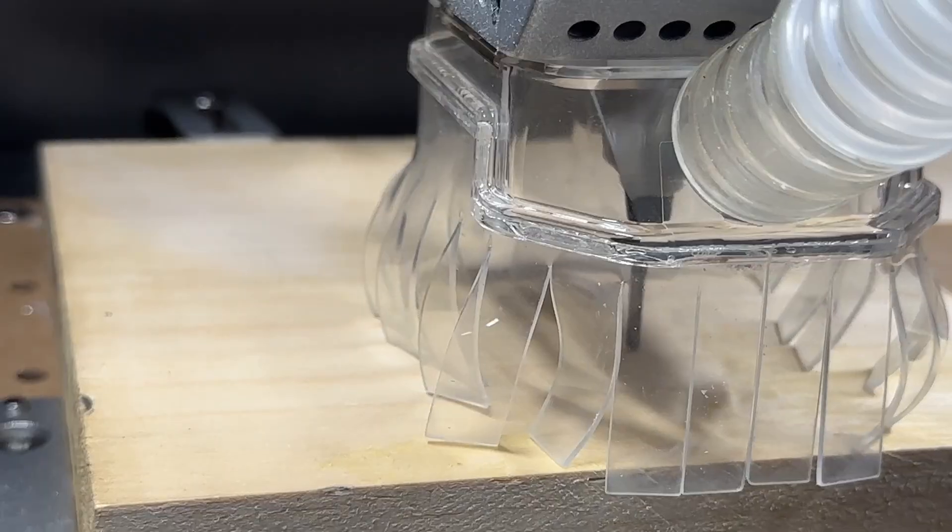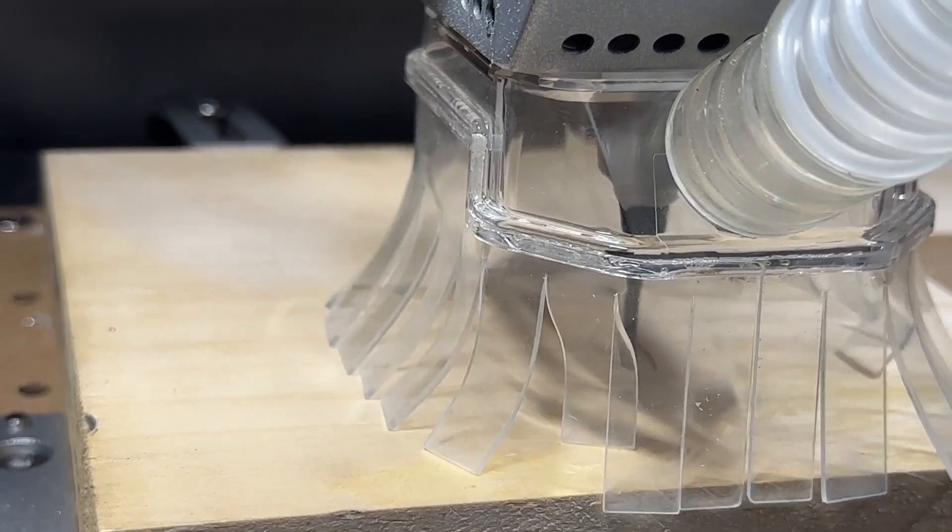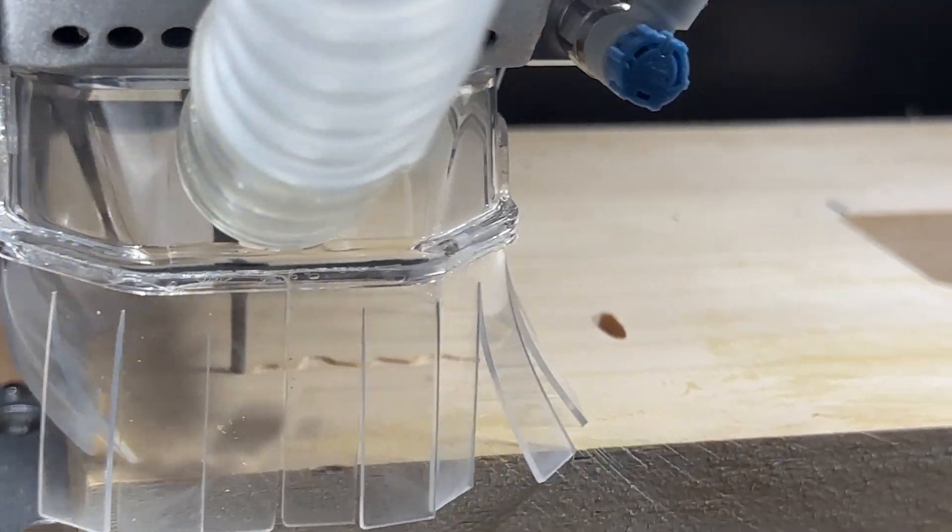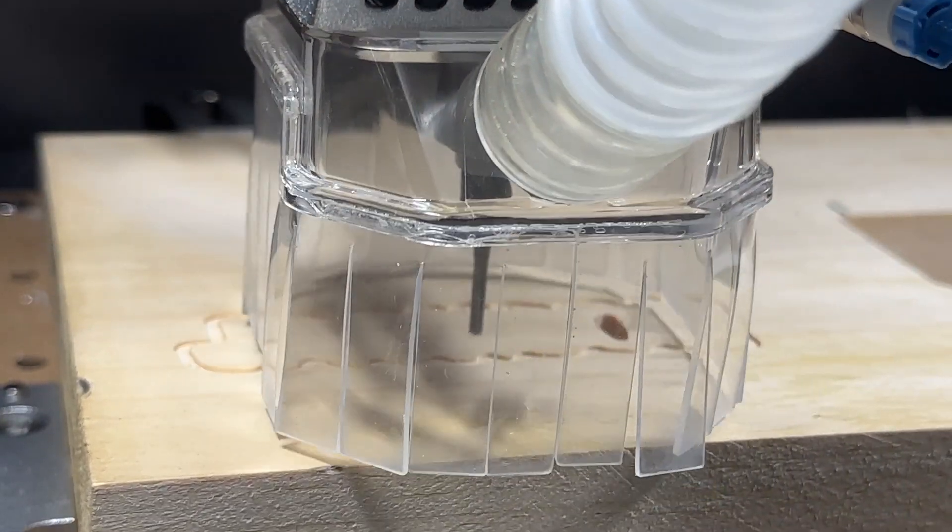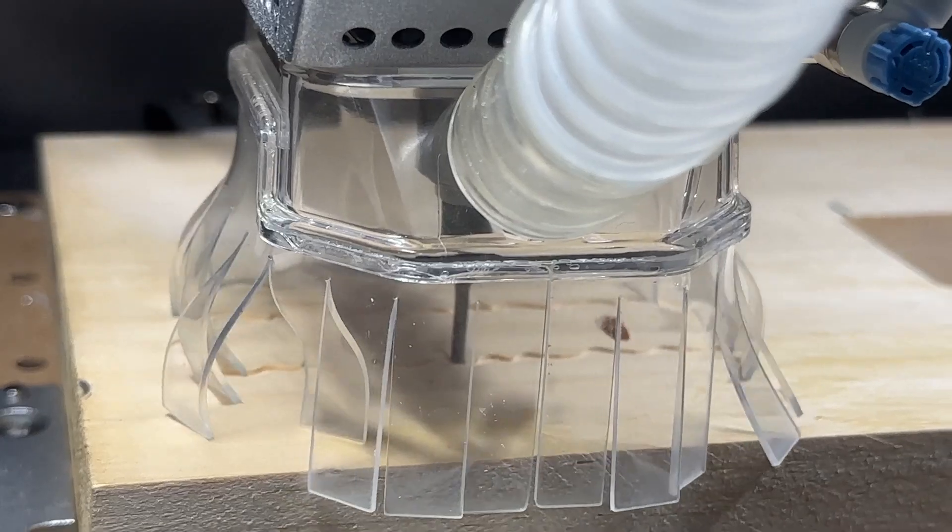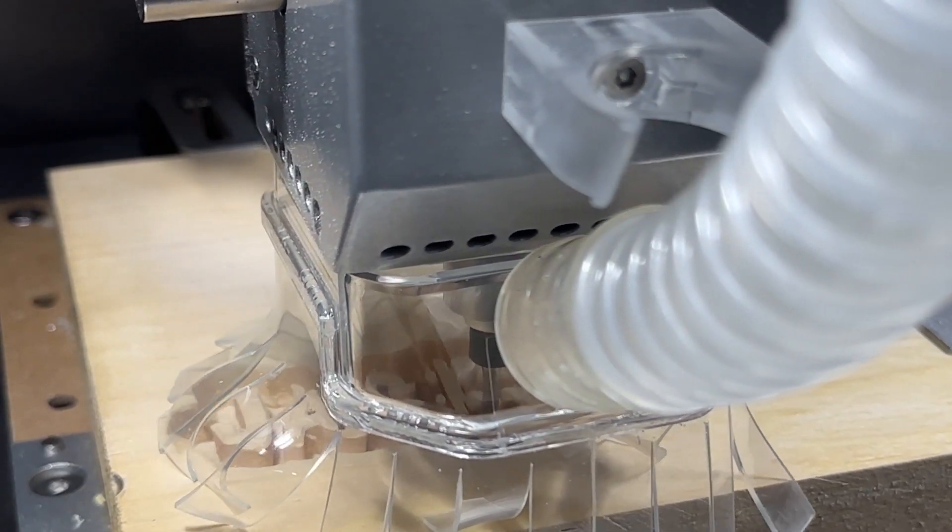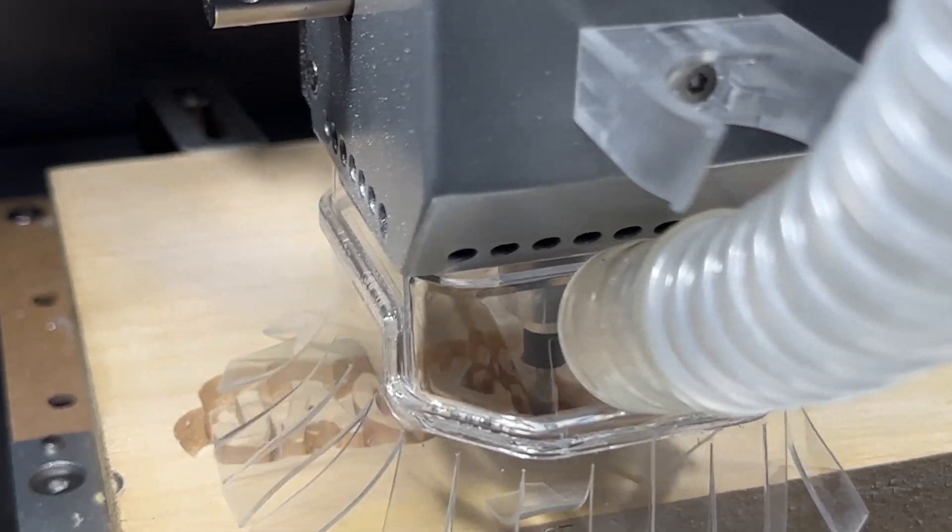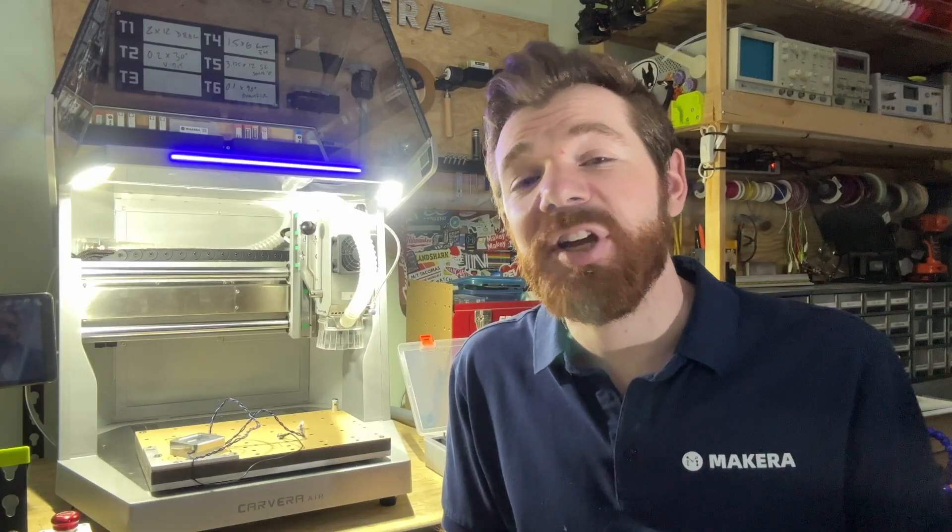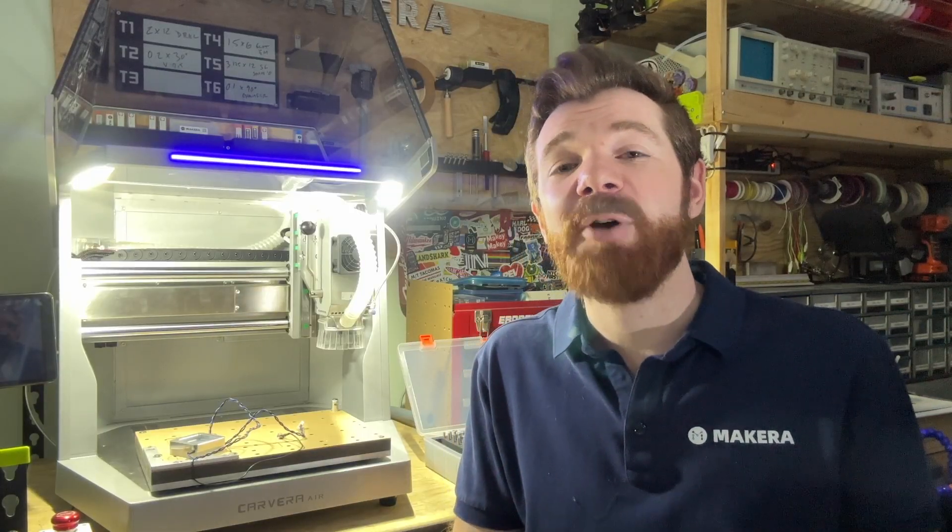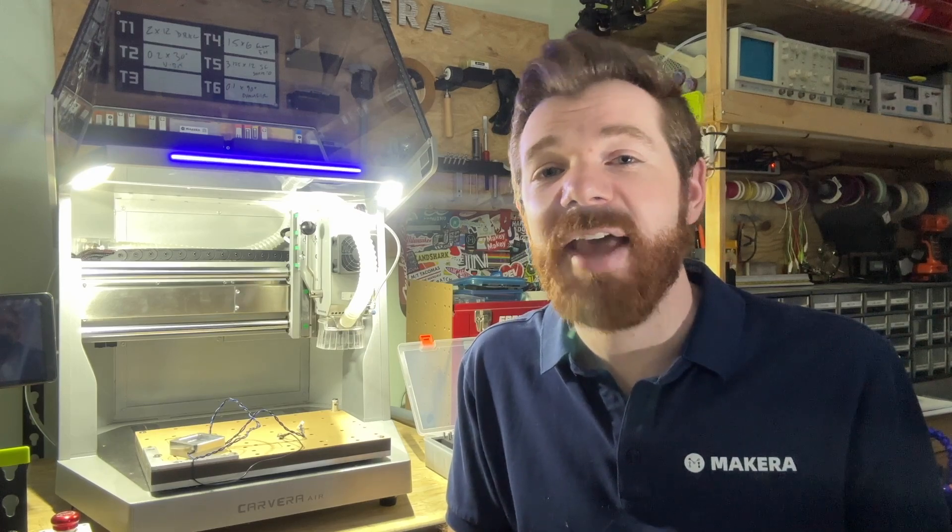And that's all there is to it. The Carvera Air Desktop CNC is a versatile machine designed to accommodate a wide range of projects and materials. For whatever the circumstance, these different methods for obtaining and setting your stock origins allow you to create just about anything suiting your needs and personal preferences. Thanks for watching and please don't forget to subscribe and stay tuned for more how-tos and guides on our channel and wiki site.